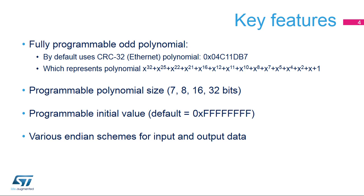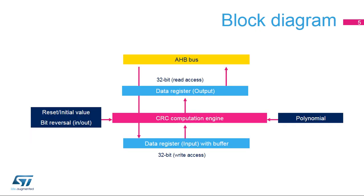The peripheral can be configured to support big or little endian formats of the input and output data, supporting various communication protocols. The CRC calculation unit is connected to the AHB bus interface for optimal performance. It contains a single 32-bit register, which is used for both writing and reading by either the CPU or DMA controller.